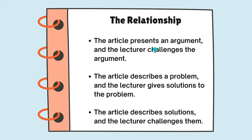You really have to remember what the relationship is between the reading and the lecture because it never really changes. There are just three possibilities. First, you could get one where the article presents an argument and the lecturer challenges the argument — that's probably the most common. Next, you could get a question where the article describes a problem and the lecturer gives solutions to the problem. Finally, you could get the opposite: the article describes solutions to some problem and the lecturer challenges them.